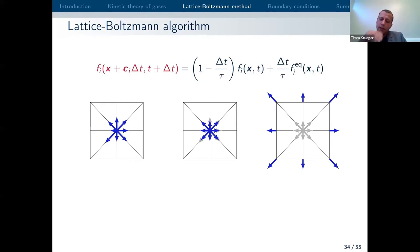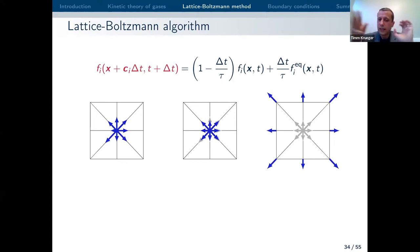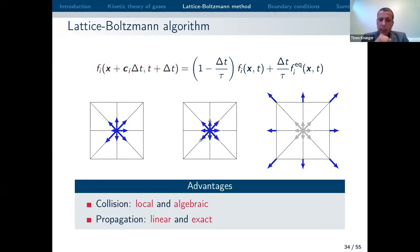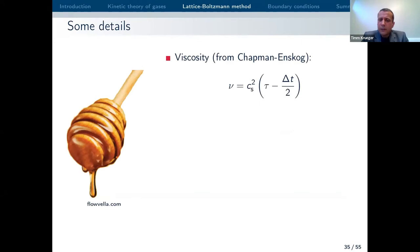Then we propagate or stream our populations to the next neighbor according to the direction they point in. If you do that at every grid point, after the time step you will have 9 populations again at each grid point — everything moves over the lattice during the streaming step, but streaming and collision are decoupled in lattice Boltzmann. The advantages: collisions are local and algebraic — you just need to work out the equilibrium distribution function. Propagation is linear and exact because you go along characteristics. The viscosity is directly related to the single relaxation time τ used in the BGK operator.